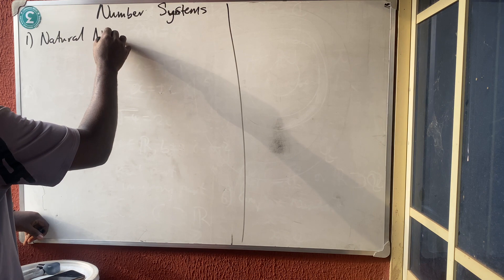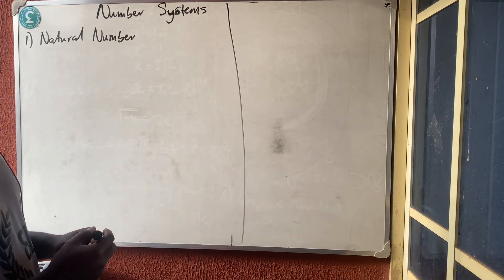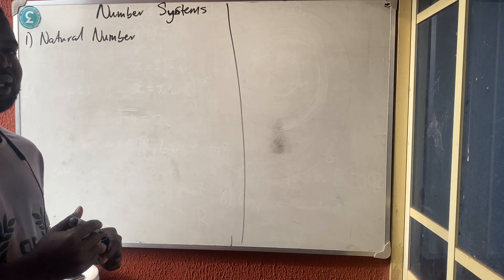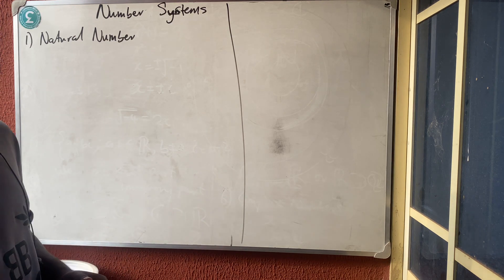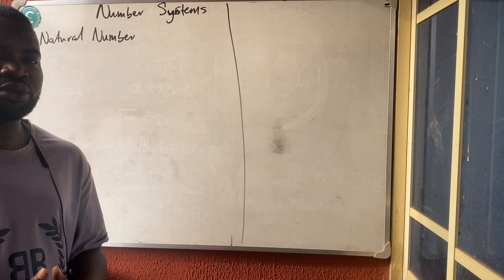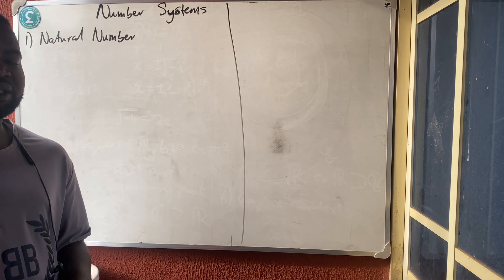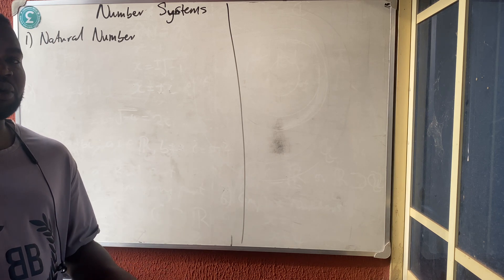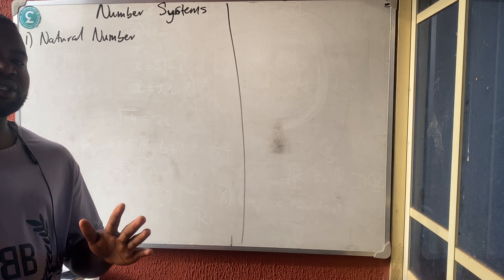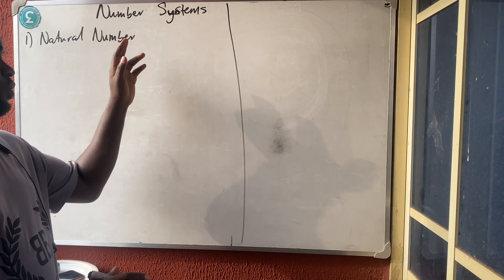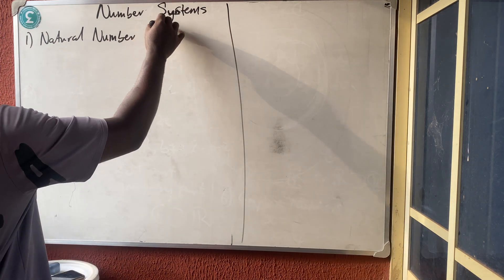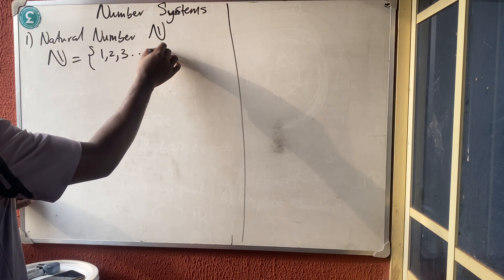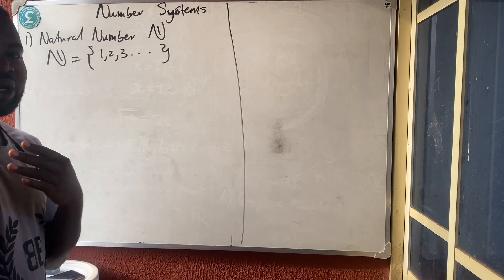Natural numbers are just the set of positive whole numbers. To remember this: when you were in nursery or primary school and they asked you to recite numbers, you always started from 1, 2, 3, 4 and so on — never from zero or a negative. So you were in your natural state. We represent natural numbers as N, so N equals the set {1, 2, 3, ...} to infinity.